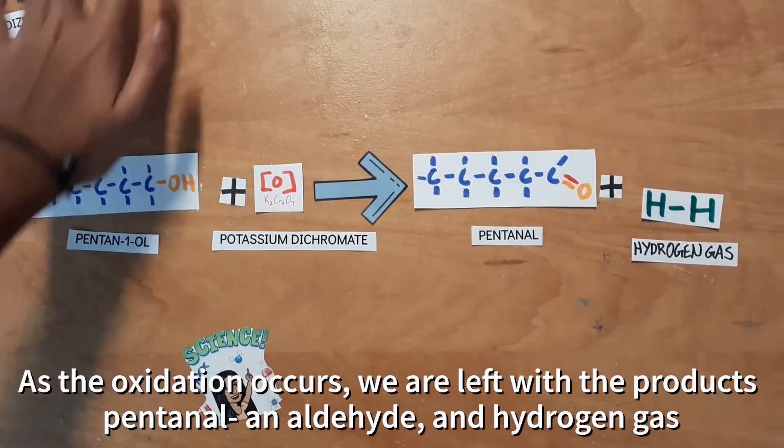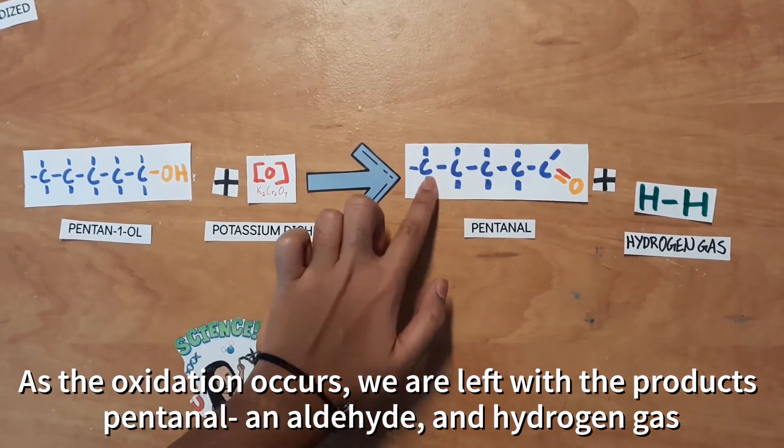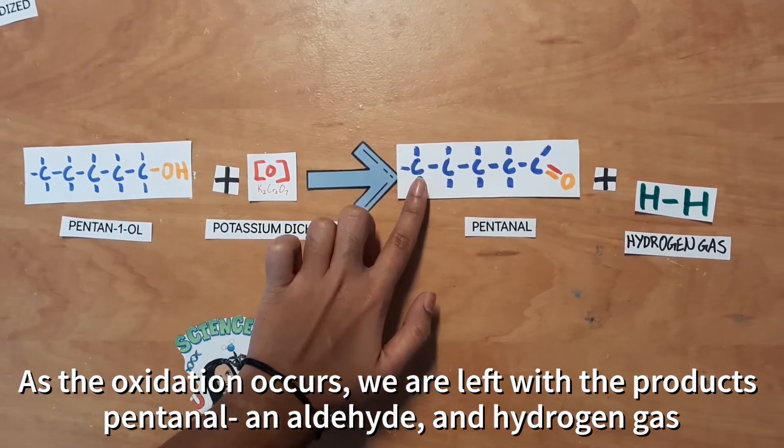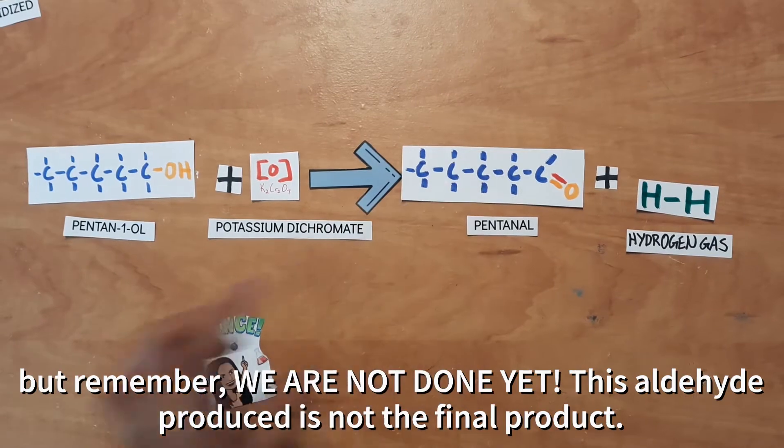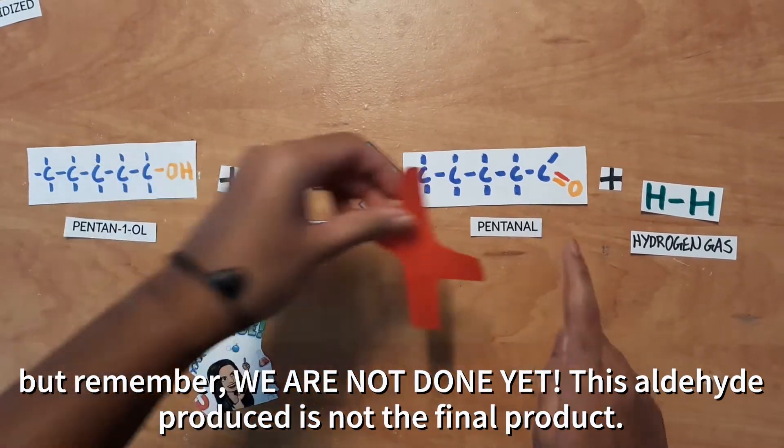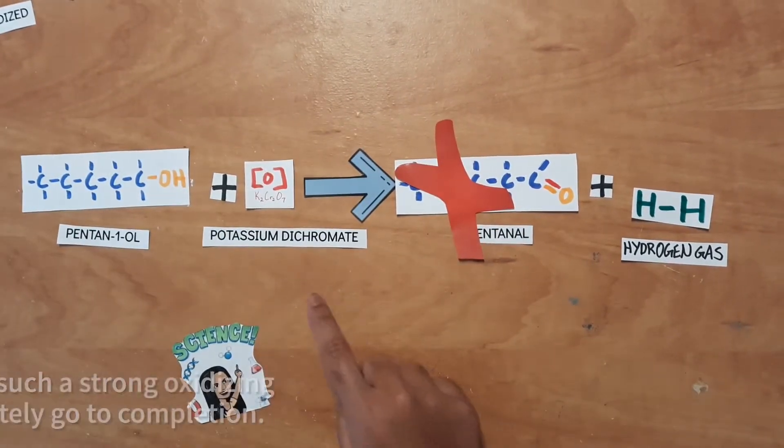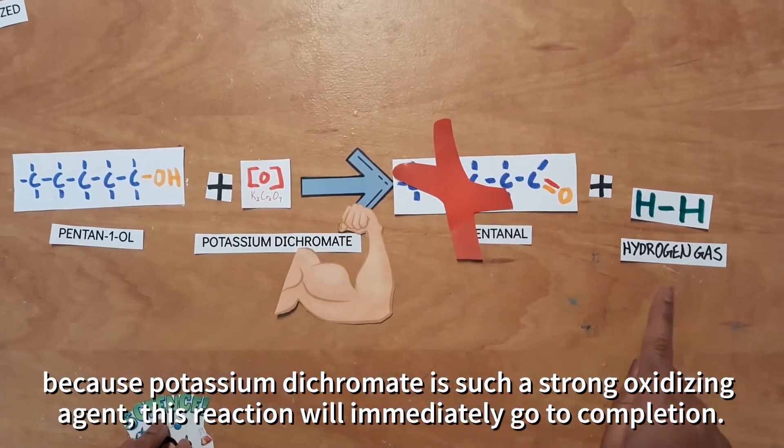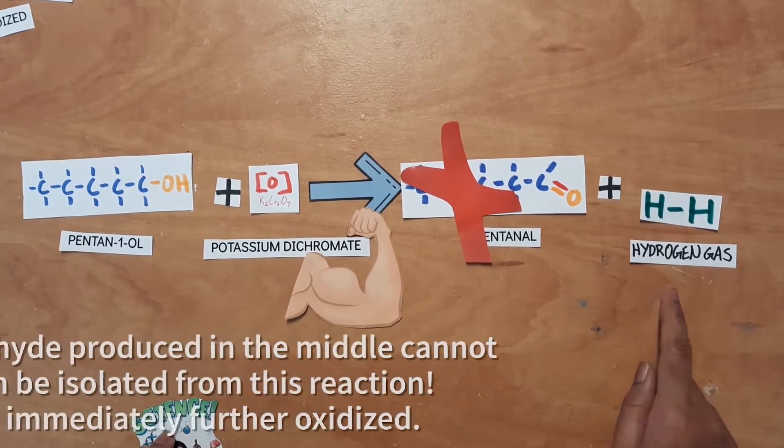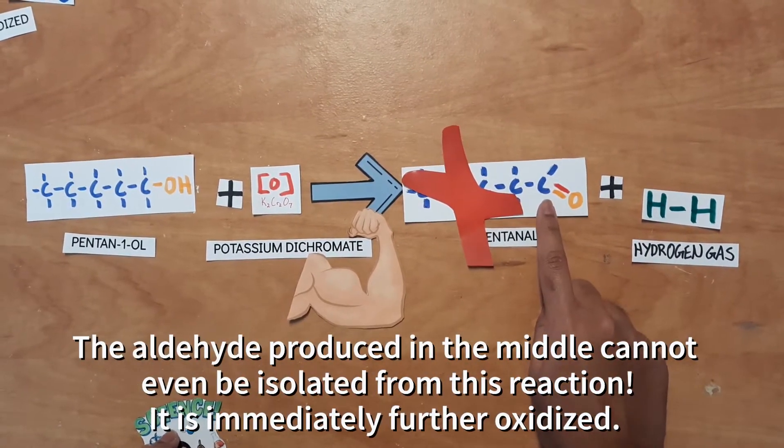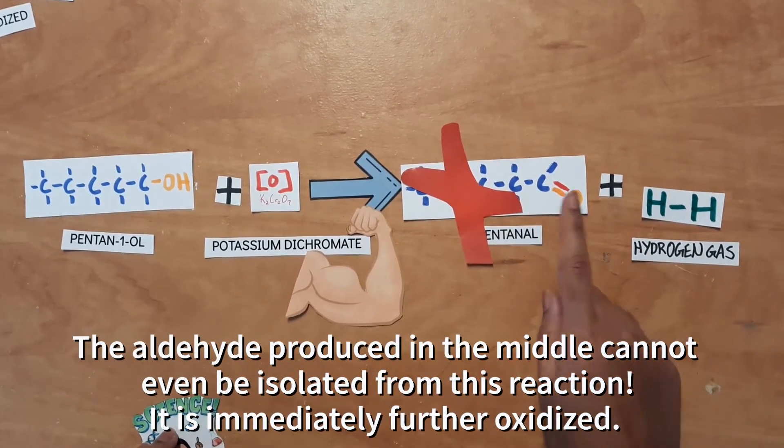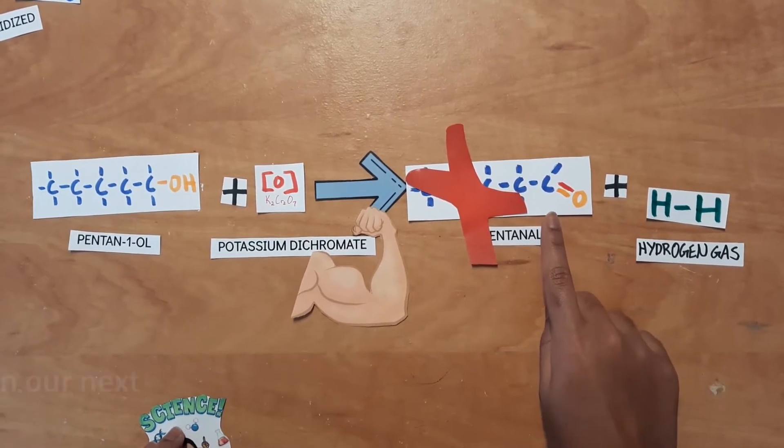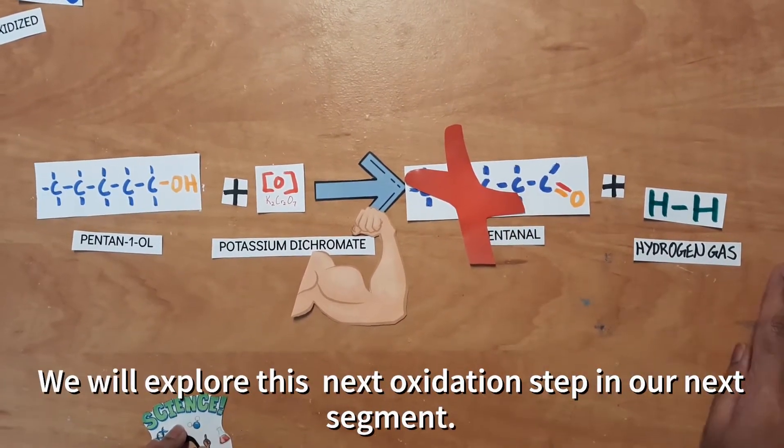As this oxidation occurs, we are left with the products pentanal, an aldehyde, and hydrogen gas. But remember, we are not done yet. This aldehyde produced is not the final product. Because potassium dichromate is a strong oxidizing agent, this reaction will immediately go to completion. The aldehyde produced in the middle cannot even be isolated from this reaction. It is immediately further oxidized. We will explore the second oxidation step in our next segment.